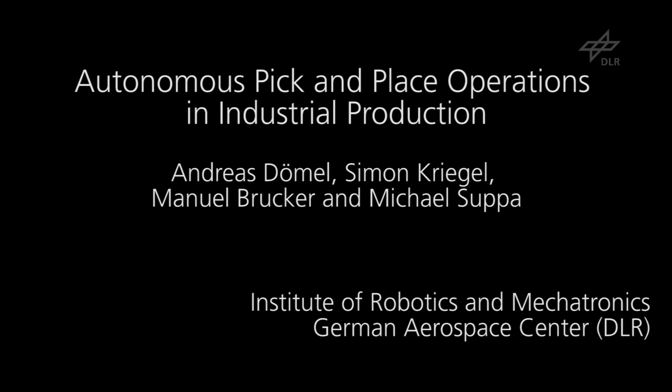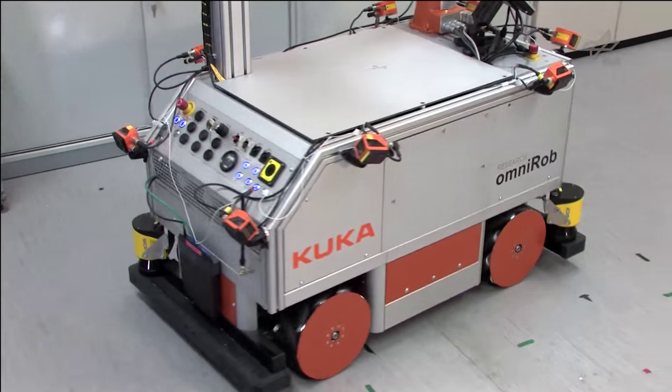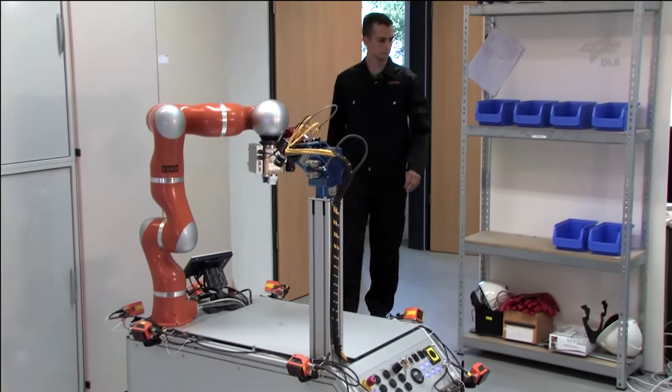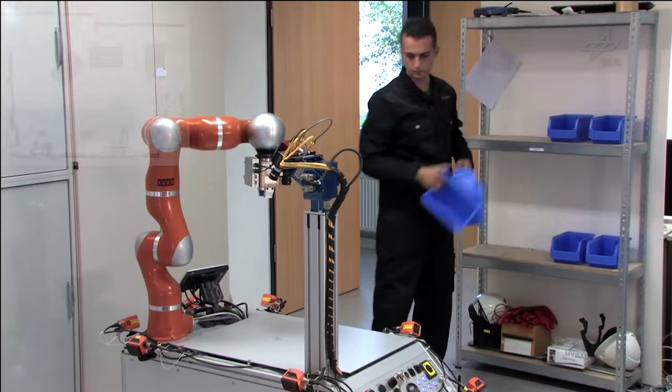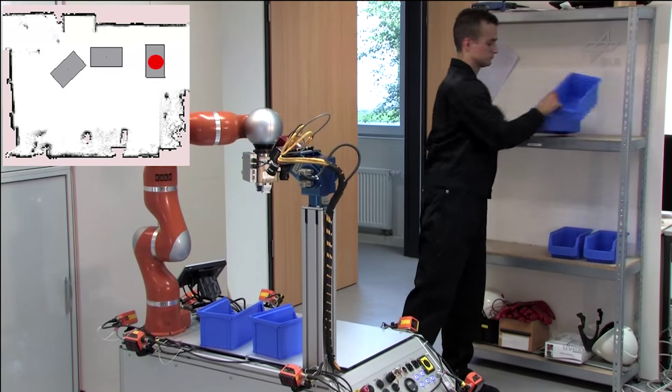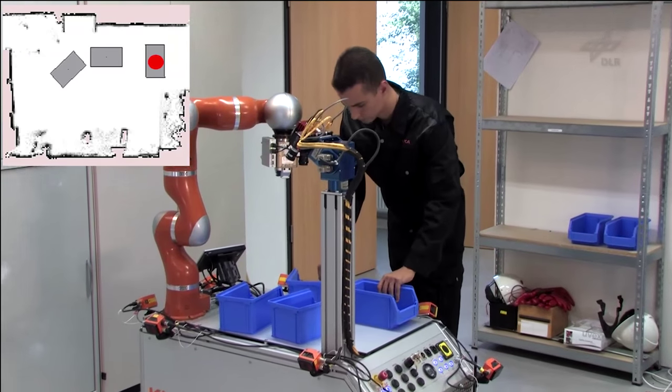Autonomous pick and place operations in industrial production environments. We present the execution of a robotic manipulation task in a realistic industrial scenario. The robot's task is to autonomously restock the parts needed at an assembly station, similar to the production site at KUKA Laboratories.